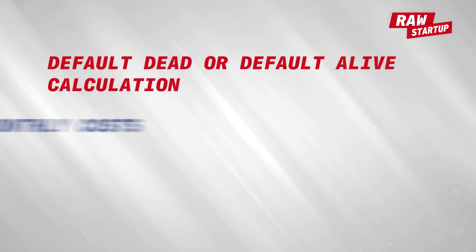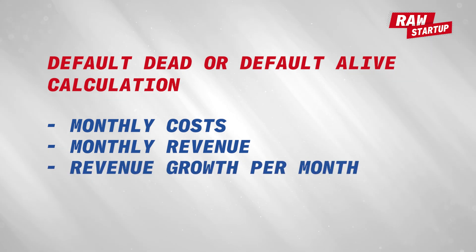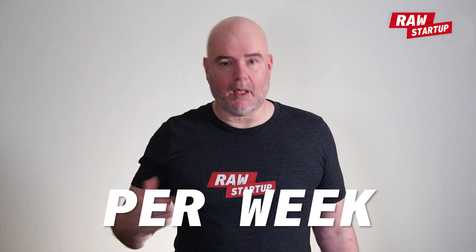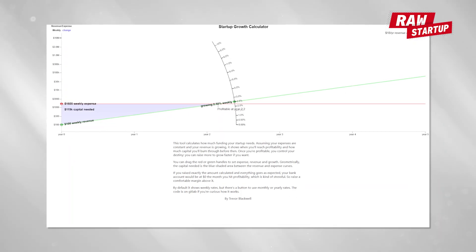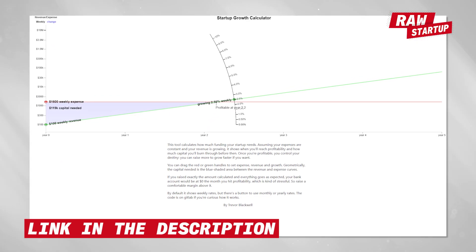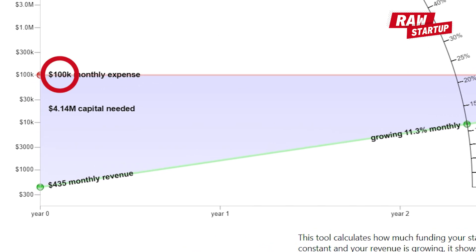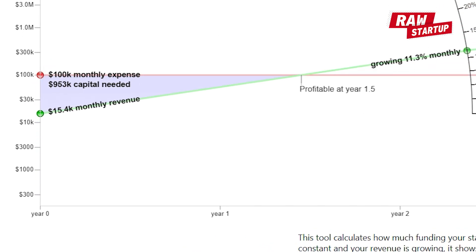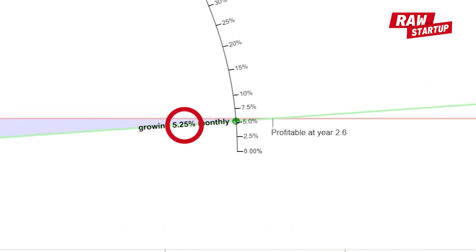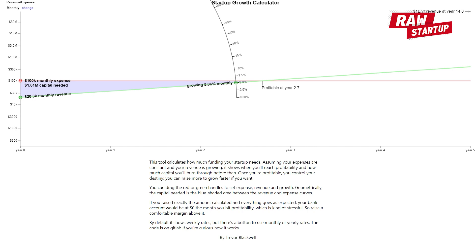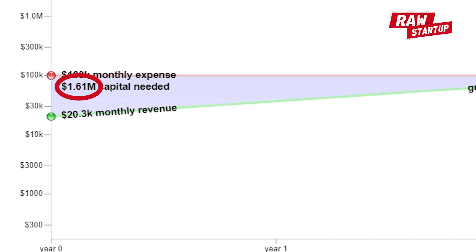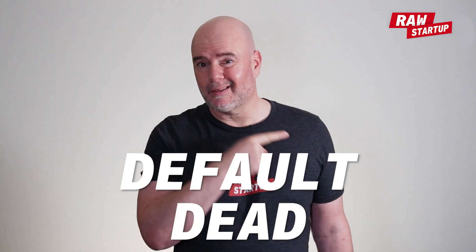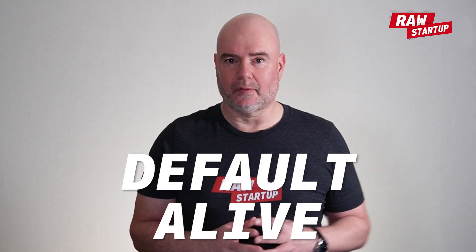To figure it out you need to know: monthly costs, monthly revenue, revenue growth per month, and money in the bank. You can do it per week, per month, or quarter — we'll do it per month. There's a simple calculator online, link in the description. Let's try an example. We have a startup that spends $100,000 a month and they have revenue of $20,000 per month. Growth rate is strong at 5% per month. So very far from being profitable, but they do have $2 million in the bank. The calculator shows it will take $1.6 million to get to break even. So with $2 million, we're therefore default alive. If we have less than $1.6 million, we are default dead. If we have more than $1.6 million, we're default alive. The calculator also shows that it takes 2.7 years to get to profitability.